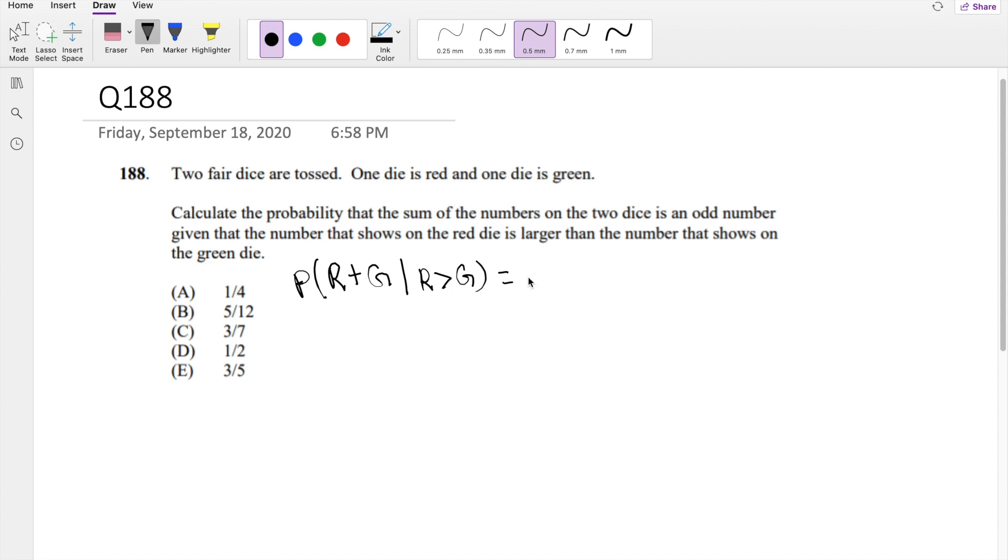As always, with the conditional probability formula, we know that this equals P of R plus G is odd and R is greater than G, divided by the probability that R is greater than G.